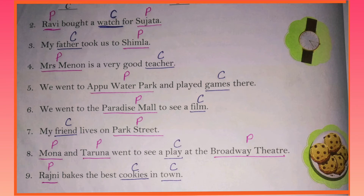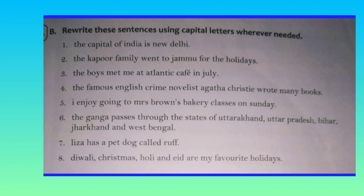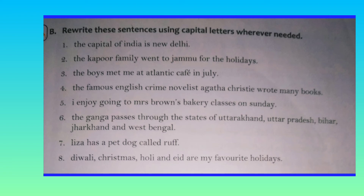Then, let's move to the next exercise: rewrite the sentences using capital letters wherever needed. Here you can notice that all the sentences begin with a small letter. You have already learned in the first chapter that a sentence always begins with a capital letter. So, first of all, you have to correct the beginning of a sentence with a capital letter. Then, you have to find out proper nouns. In the first sentence, there are two proper nouns, India and New Delhi. They are special names. You have to use the first letters of India and New Delhi in capital letters. Similarly, find out the proper nouns in each sentence and rewrite the first letter in capital letter. Remember that a sentence always begins with a capital letter.